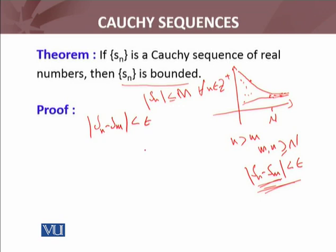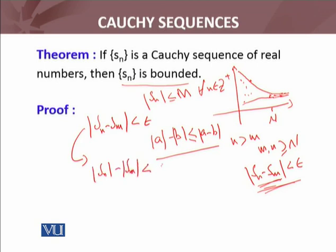Now I'll use a property of real numbers that I discussed with you. If A and B are two real numbers, then |A| - |B| ≤ |A - B|. This property of real numbers is related to the triangle inequality. Using this and some properties of real numbers I discussed, I can write |Sn| - |Sm| < |Sn - Sm| < ε.